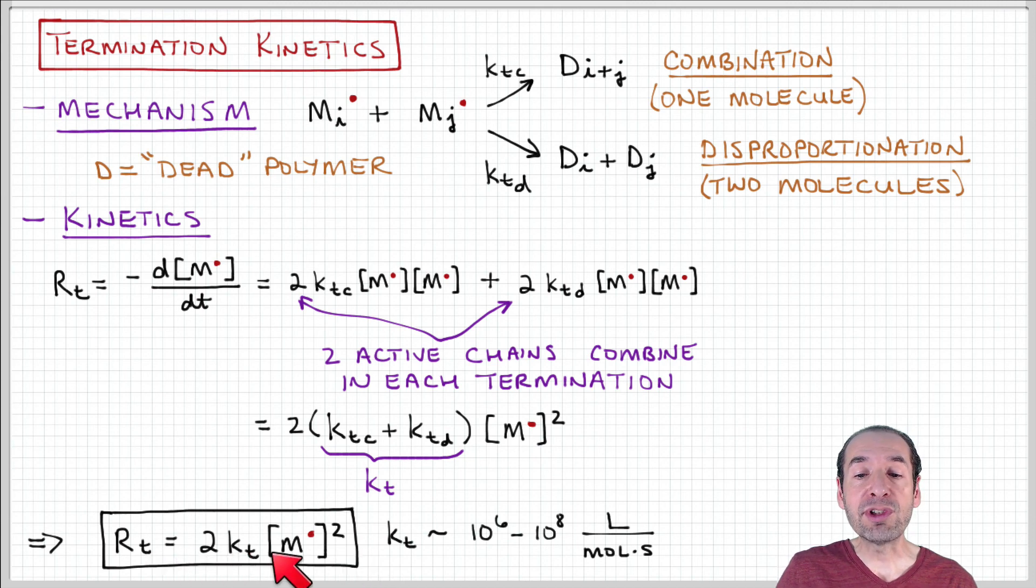The rate of termination is equal to two times this overall rate constant times the concentration of active chains, or the quantity of active chains, squared.